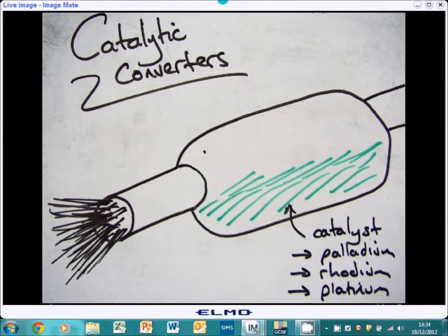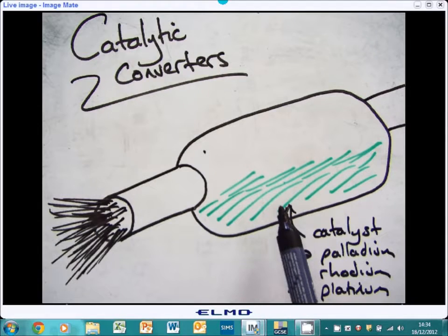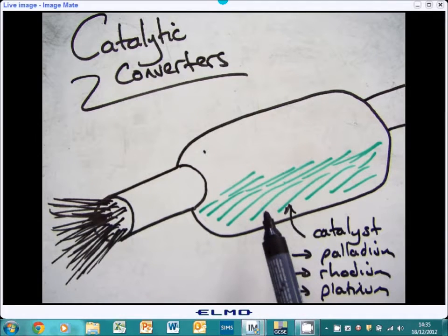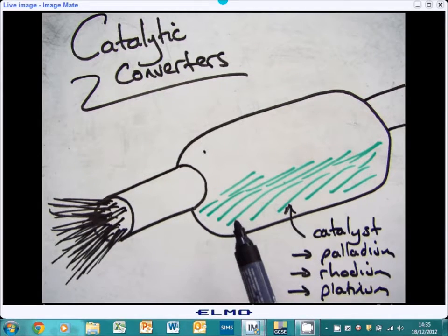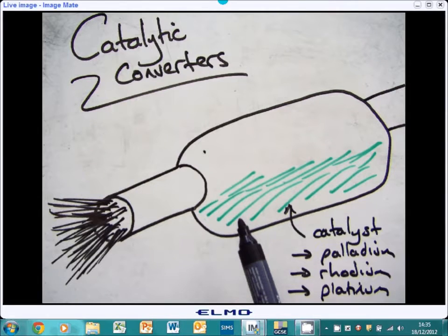So what they do is they use a catalyst. Now this can be either palladium, rhodium, platinum or a mixture of the three. Because these metals are quite expensive, what they do is they crush the metals up into a powder and coat the inside of the catalytic converters with it. This means that it has a larger surface area for the catalyst to react with the carbon monoxide.